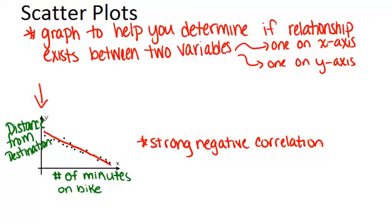Another way to think about it is this line that I drew in here has a negative slope, so it's a negative correlation. I'm saying it's a strong correlation because I noticed that all these points are really close to that line I drew in. They're really bunched together and are very close to a line, so that's why it's a strong negative correlation.